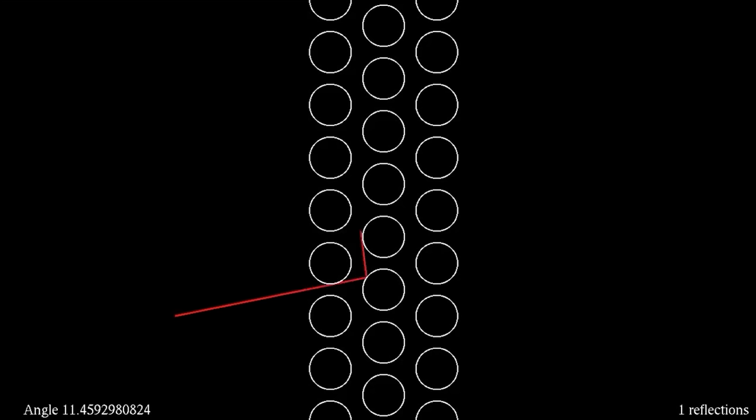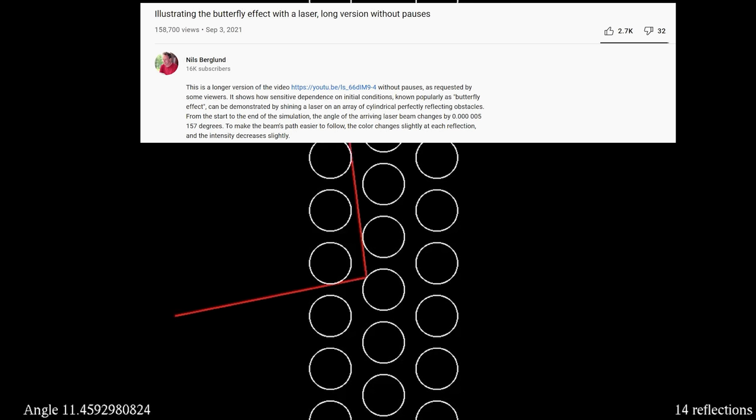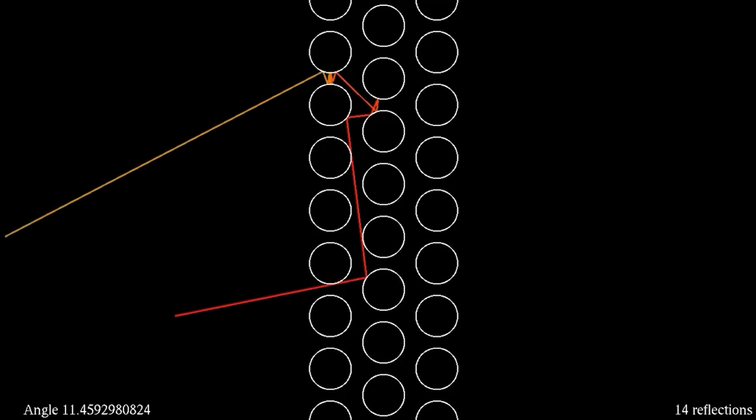The butterfly effect can be seen in a lot of different experiments. For example, watch the simulation created by Niels Berglund. In this simulation, you have the input of the laser here, and then we're changing the angle of it slightly. You can see that at the 9th decimal place, the angle is changing very slightly.